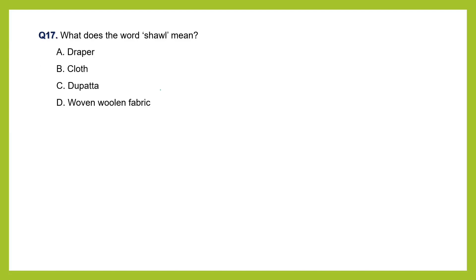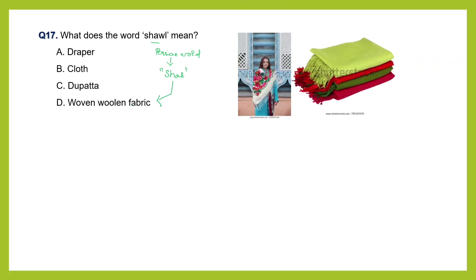Question 17: what does the word 'shawl' mean? Draper, cloth, dupatta, or woven woolen fabric? The word shawl is derived from the Persian word 'shal' (S-H-A-L), meaning woven woolen fabric. A shawl is a fabric draped across the shoulder to provide protection against the cold. Note that it is a woven woolen fabric - the woolen threads are woven, not knitted. The answer is D: woven woolen fabric.